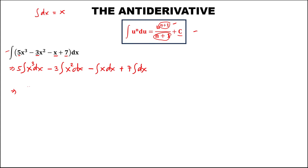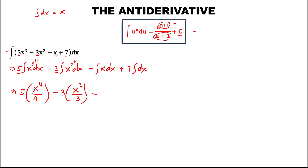To find the antiderivative using the formula, add 1 to the exponent. Bring down the constant, and this becomes x to the power 4, over 4. Then minus, bring down the constant, this becomes x to the power 3, over 3. Then minus, since x has exponent 1, add 1, giving x to the power 2, then plus 7x, then plus c.